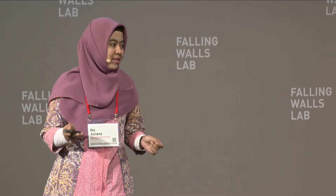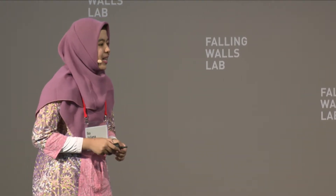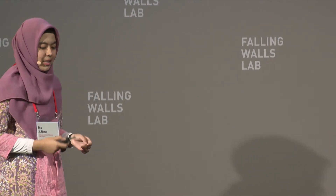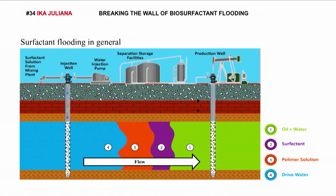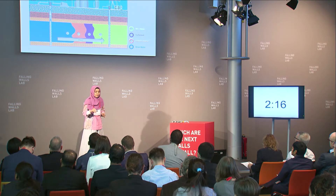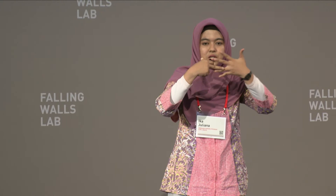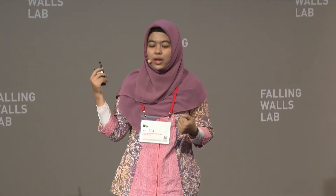In the petroleum industry, surfactants are used to enhance oil recovery through surfactant flooding methods. Surfactant solutions, such as petrochemical and bio-based, are injected into oil wells to push the existing oil from the rock pores, improving oil production and enhancing oil recovery.